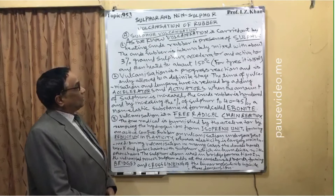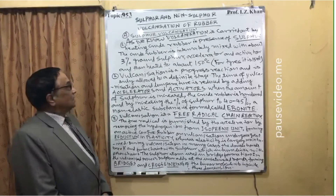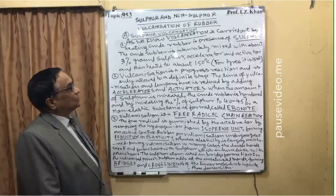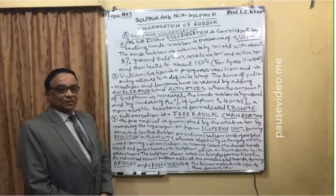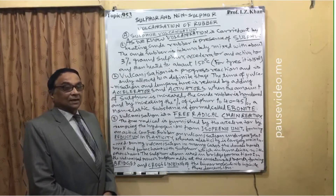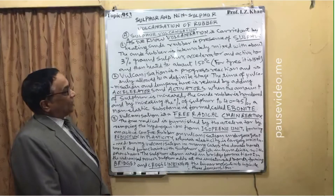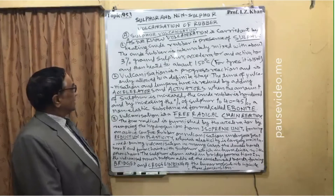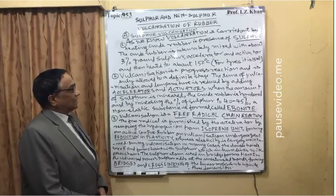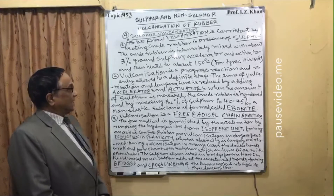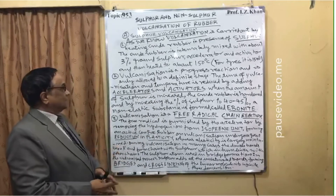Sulphur vulcanization is carried out by heating crude rubber in the presence of sulphur. The crude rubber is internally mixed with about 3% ground sulphur, an accelerator, and an activator. Accelerators are usually aldehyde or amino derivatives and are responsible for activating and accelerating the process of vulcanization. The mixture is then heated to about 150°C; for tyres it is heated up to 154°C. Vulcanization is a progressive reaction and is only allowed to proceed to a definite stage, with the time and temperature reduced by adding accelerators and activators.